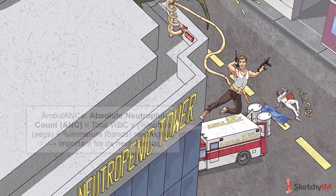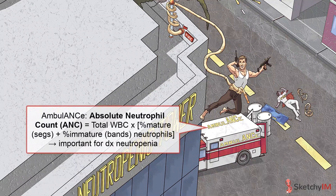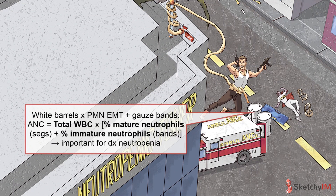The absolute neutrophil count, which we'll call ANC, is calculated by multiplying the total white blood cell count by the percentage of segmented neutrophils and the percentage of bands. Another way to think about this is the percentage of mature and immature neutrophils.